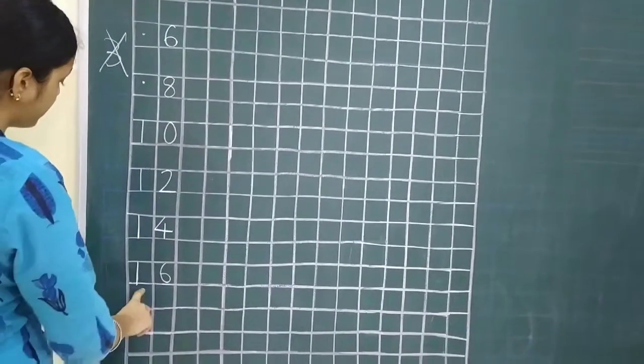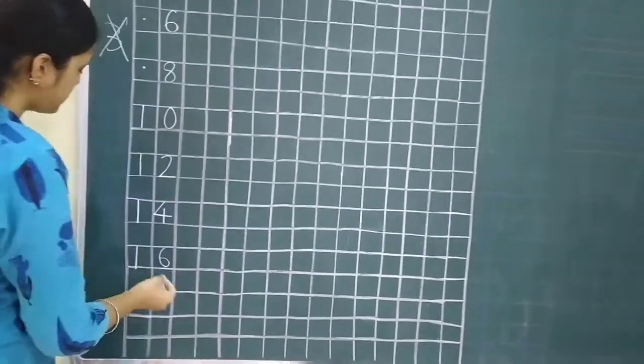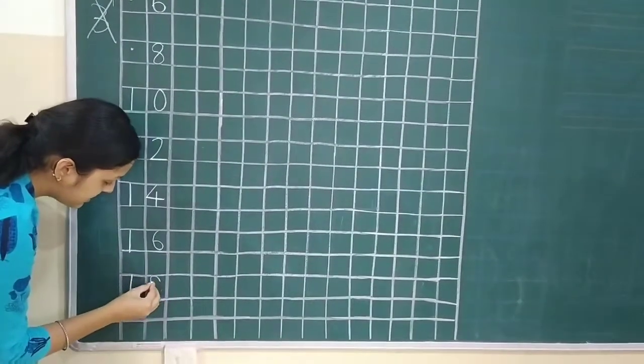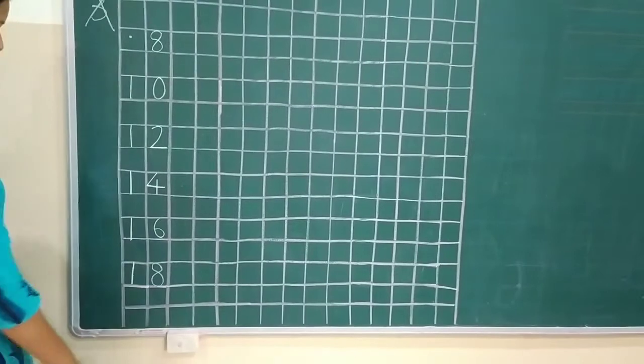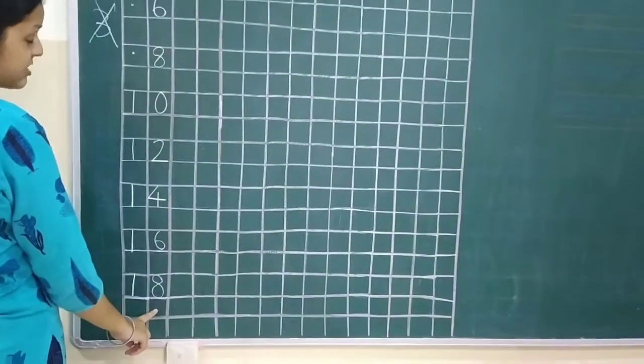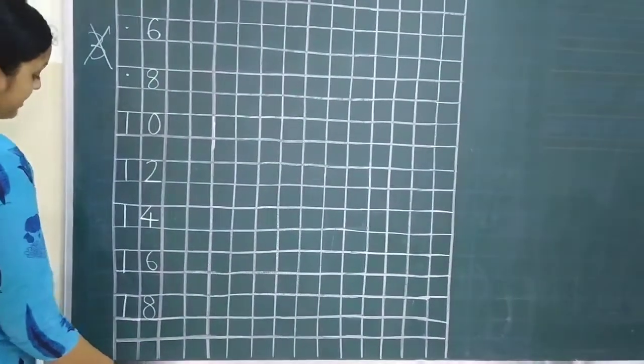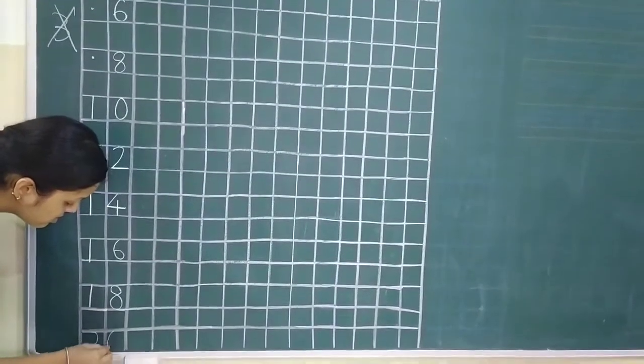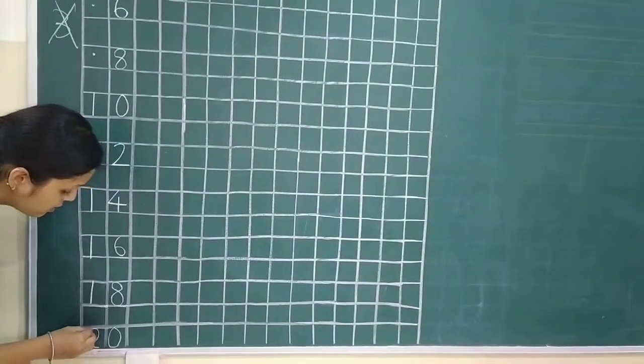Next. After 16, 17 is odd number. So, we will write 18. Next. 19 is odd. Then we will write 20.